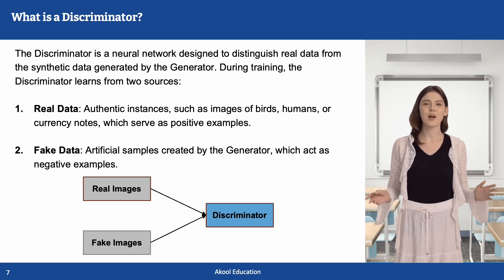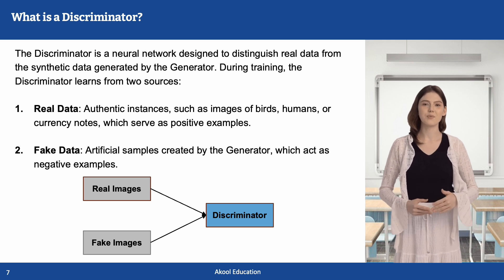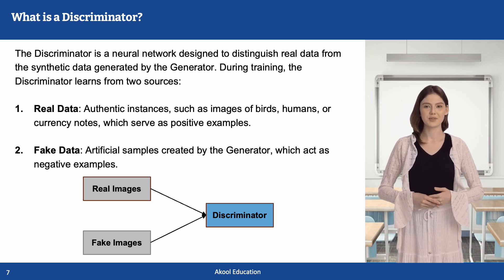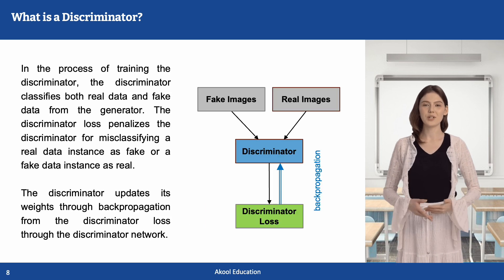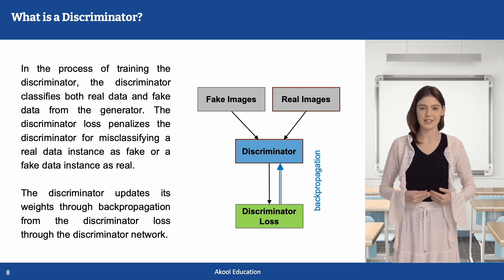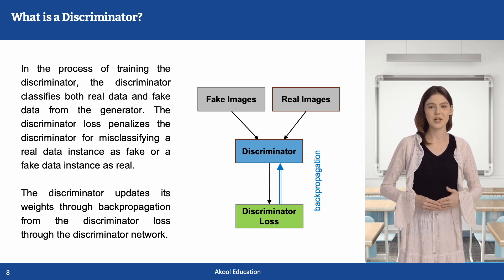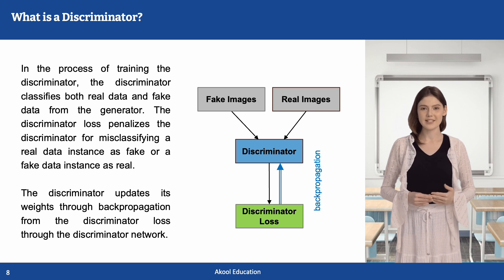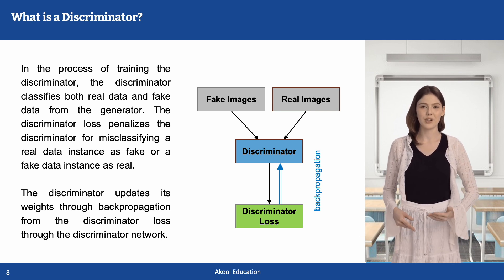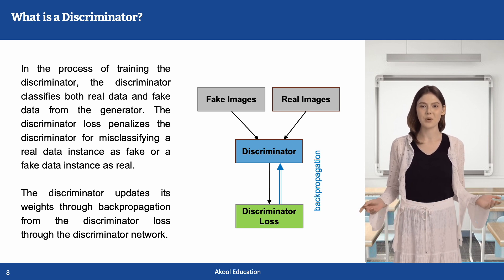The other source is fake data — artificial samples created by the generator — which act as negative examples. In the training process, the discriminator classifies both real and fake data. The discriminator loss penalizes it for misclassifying a real data instance as fake or a fake data instance as real. The discriminator updates its weights through backpropagation from the discriminator loss through the discriminator network.